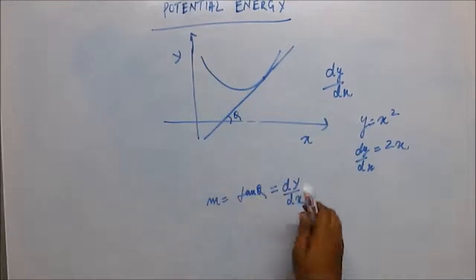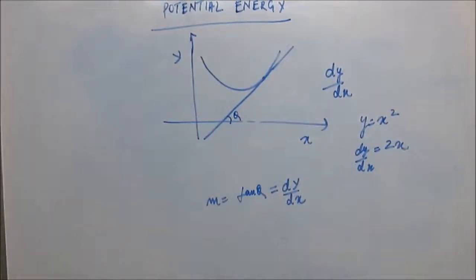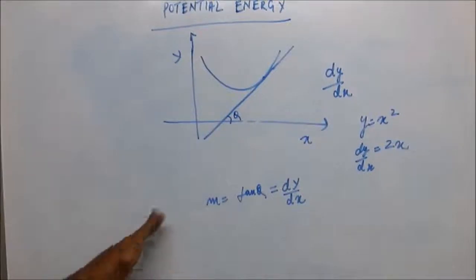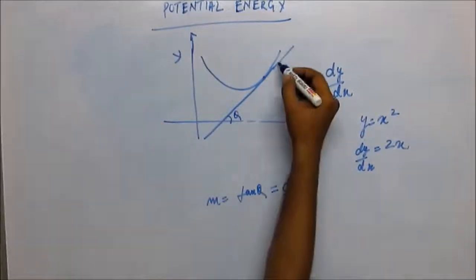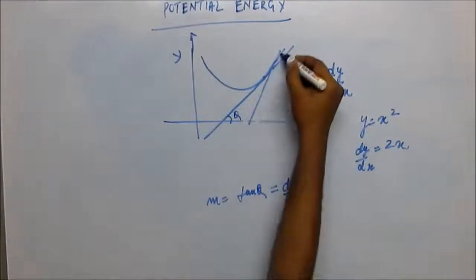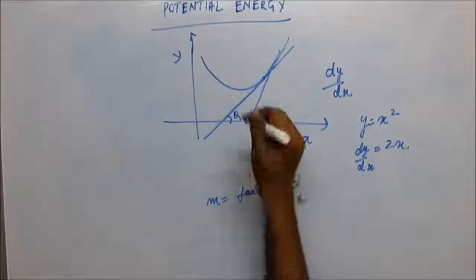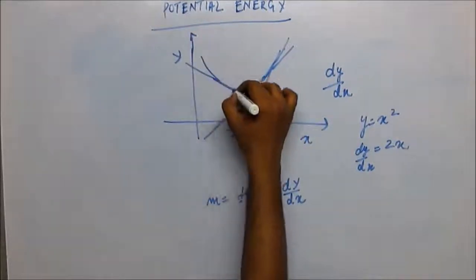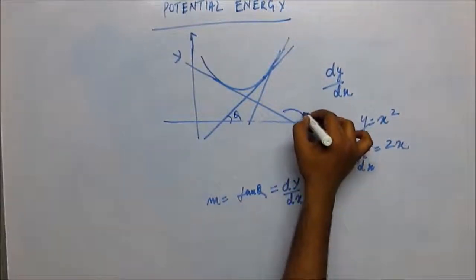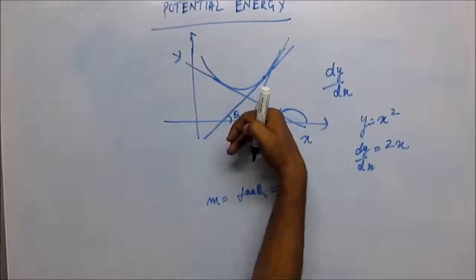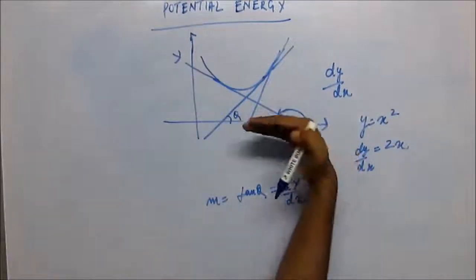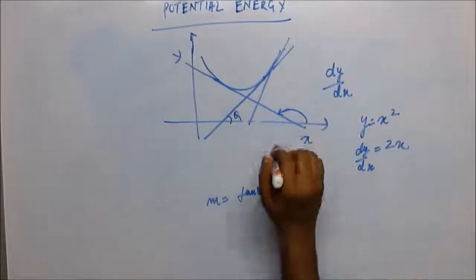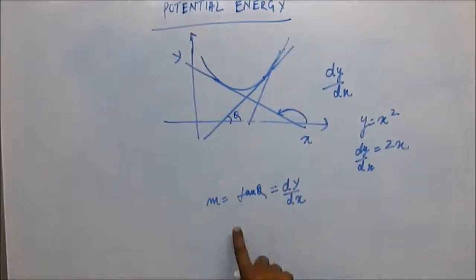Tan θ is positive in the first quadrant, meaning when θ is between 0° and 90°. Tan θ is negative when θ is between 90° and 180°. Just by looking at the graph, you can see whether the tangent makes an acute or obtuse angle. You always measure the angle from the positive x-axis anti-clockwise. If θ is greater than 90°, then tan θ is negative, and so is dy/dx.